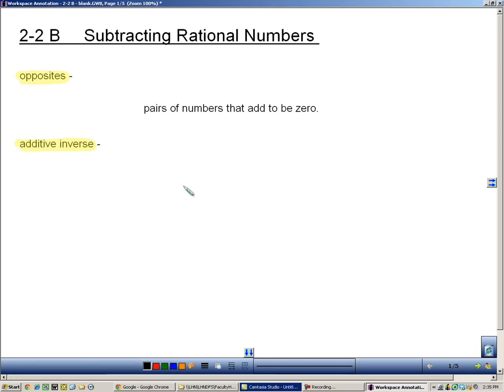Section 2-2B is about subtracting rational numbers. Because addition and subtraction are linked, we're going to learn how to take subtraction problems and write them as addition so we can use our rules.